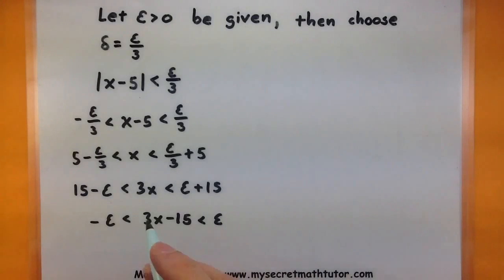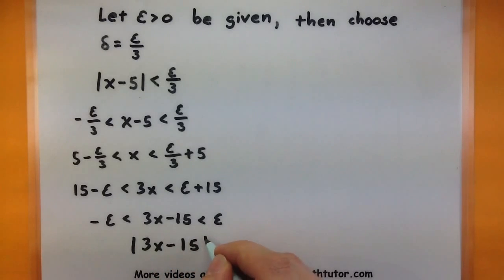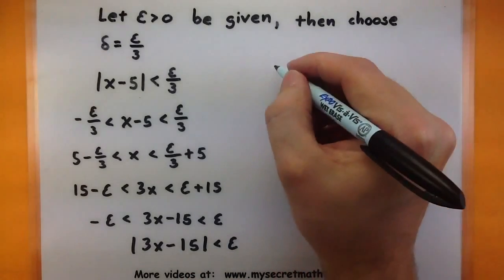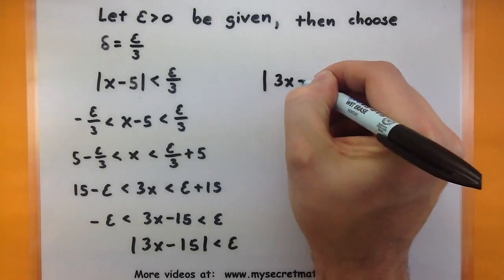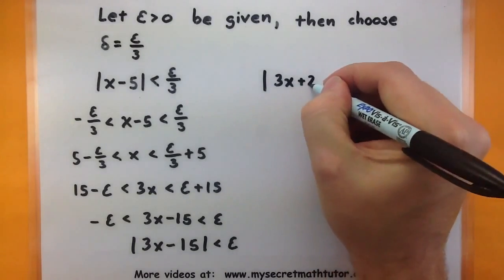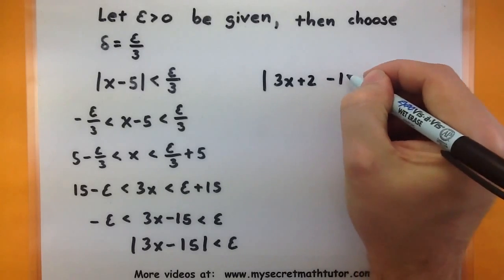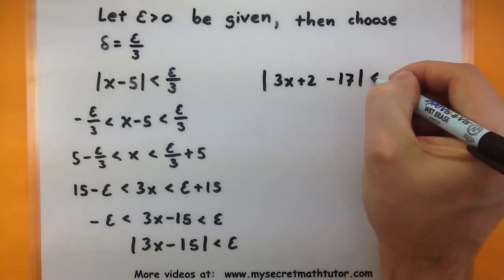Then we'll go ahead and work to package this by multiplying everything by 3. Subtract a 15 from everything. And of course, use our absolute values. Now that doesn't quite look like what we started with, but let's do one more step.